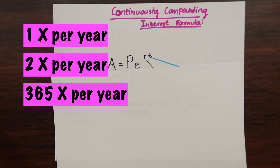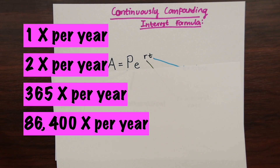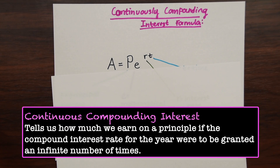We can make these intervals smaller and smaller — compounding interest now every second of the day. If we compounded interest every second of the day within a year, we have 86,400 seconds of our principal being compounded. That sounds like an amazing deal, but I've never actually seen a bank that does this. That's what this formula represents: we're compounding interest an infinite number of times. Even though this isn't really useful in the real world of finance, it's a cool interesting theoretical thing to look at.